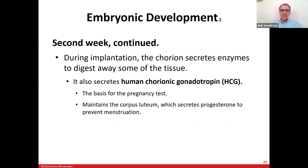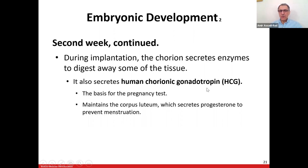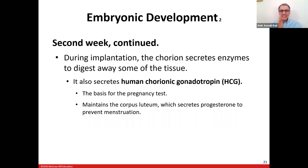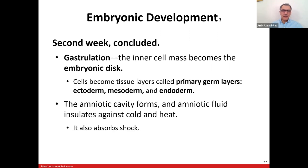During the second week, during implantation, the chorion secretes enzymes to digest away some of the uterine tissue. HCG — human chorionic gonadotropin hormone — is the hormone we detect using a pregnancy kit. We detect from urine the presence of a baby. A good quality kit is important — make sure it is not past its expiration date.